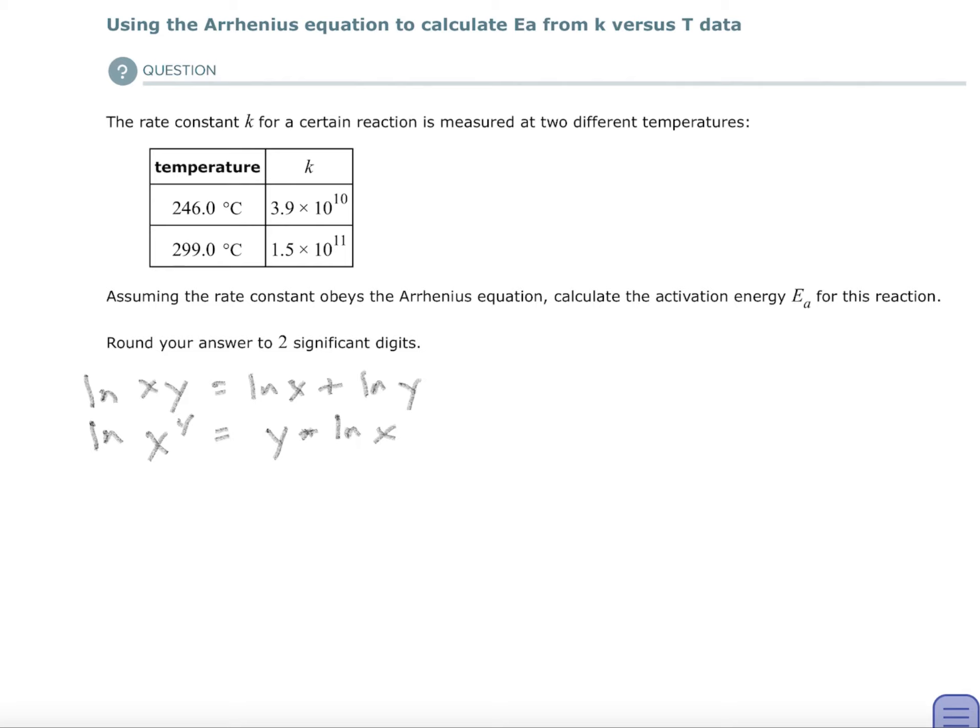The activation energy is how much energy you need to put into a system in order to make the products. You have to have enough energy to slam together, enough energy to replace all the bonds, and that takes energy to do it. So the activation energy is that.